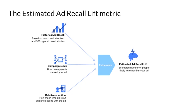The first metric is campaign reach — how many people actually viewed your ad. The second is the time spent on your ad: the relative attention given, such as whether they watched the entire video or dropped off after a few seconds, or spent two or more seconds on a single image ad. Finally, there is historical ad recall — based on a Facebook study of 300-plus global brands to understand how Facebook ads impact reach and attention. Data from these global brand studies is used to estimate the ad recall lift for your brand campaign.